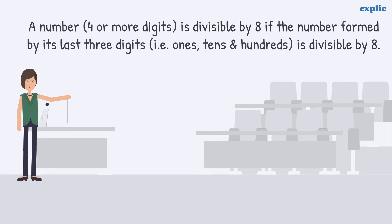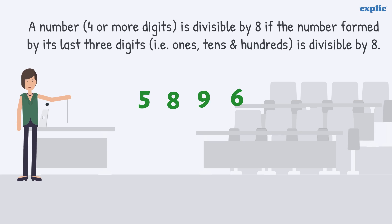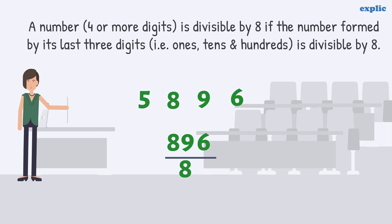A number is divisible by 8 if the number formed by its last three digits is divisible by 8. For example, 5896 is divisible by 8 because 896 is divisible by 8.